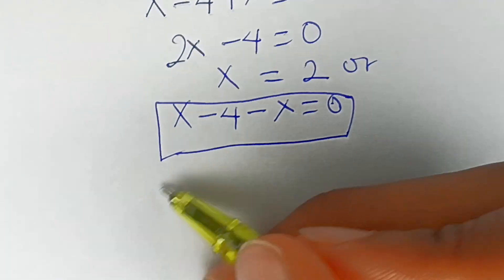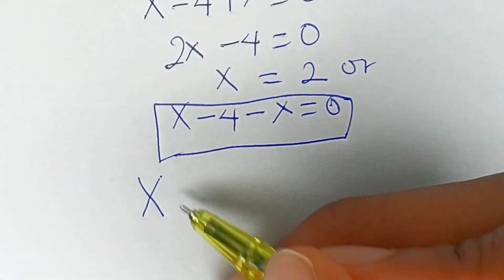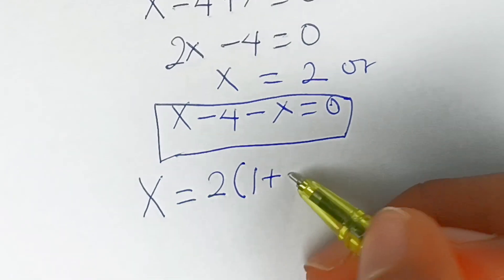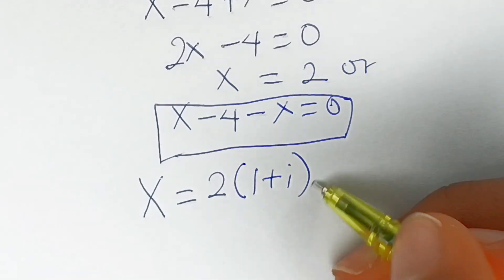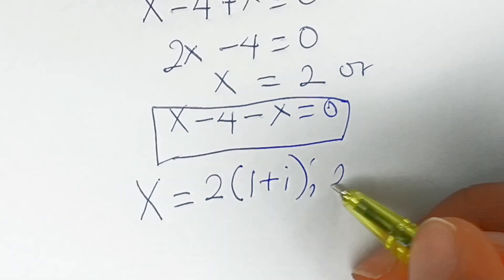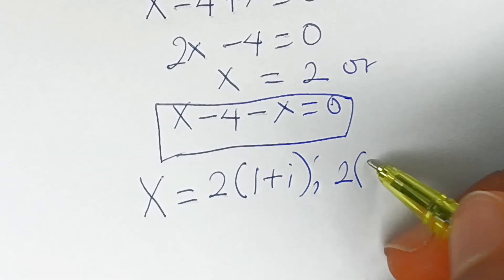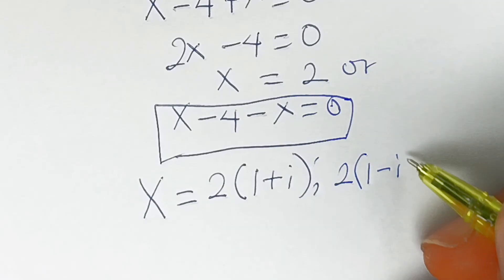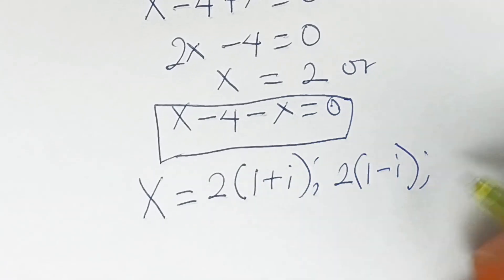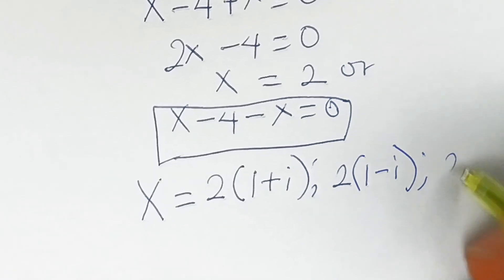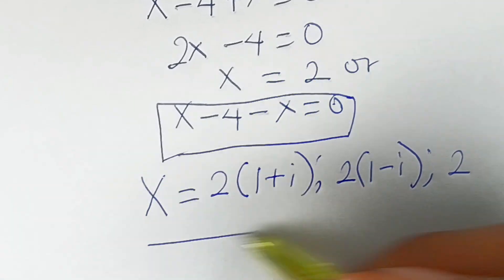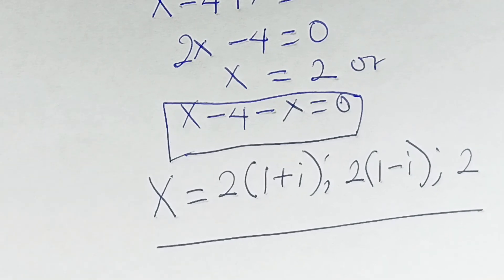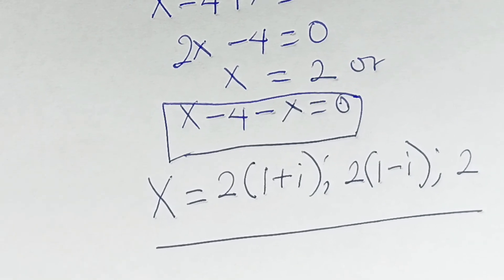So our three answers for x are: x equals 2(1 plus i), x equals 2(1 minus i), and x equals 2. These are the three solutions for x in this equation. Thanks for watching, see you in my next video.